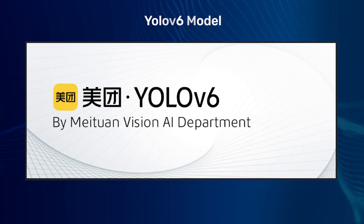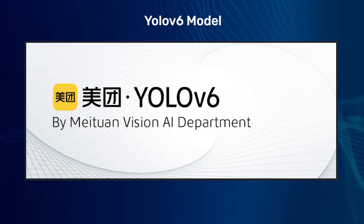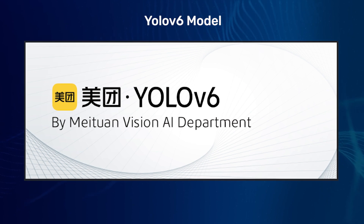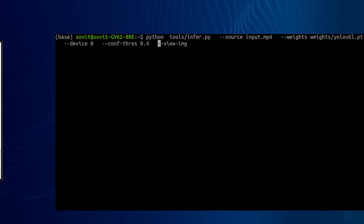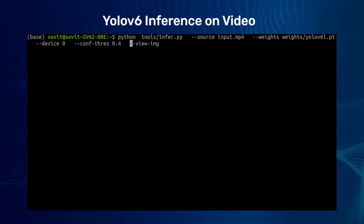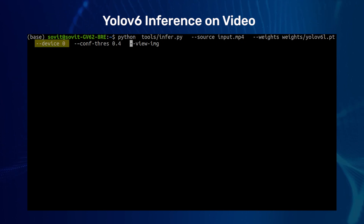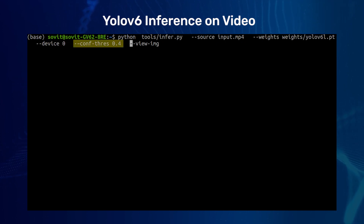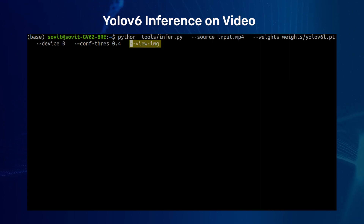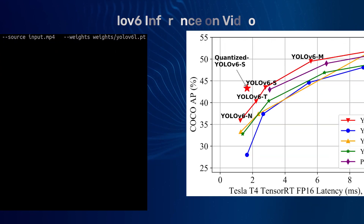The YOLO v6 models are hosted by Meituan and can be found on the GitHub page. To run inference, provide the source to the input file, the path to the pre-trained weights, select between GPU and CPU, and set a custom confidence threshold. If you pass a view-image flag, it will display the output; otherwise it will silently save the output to disk.